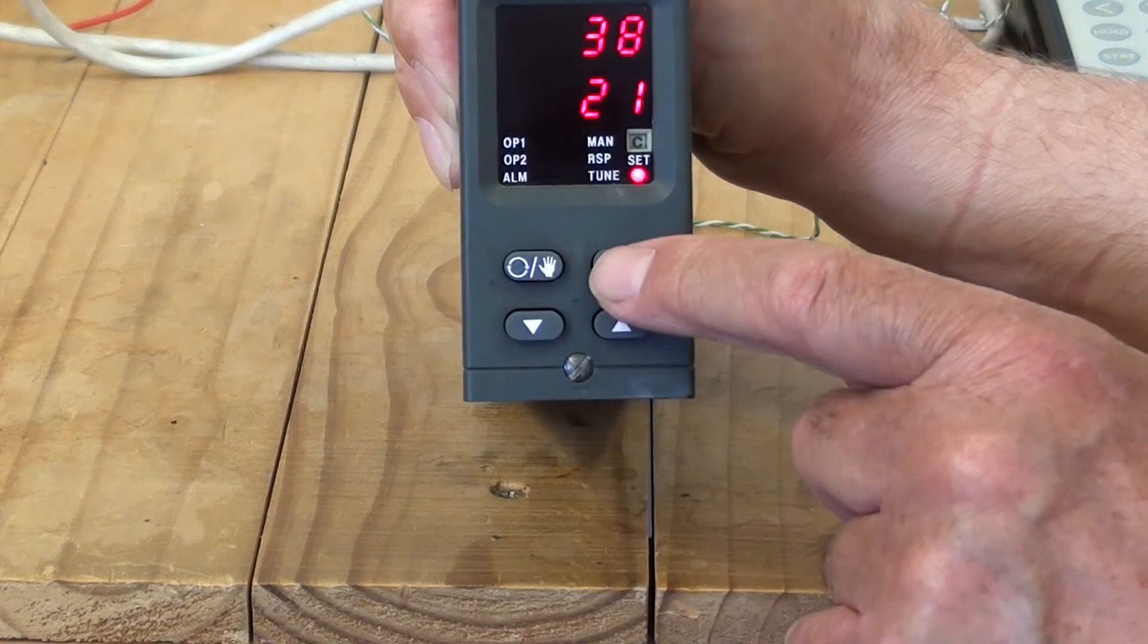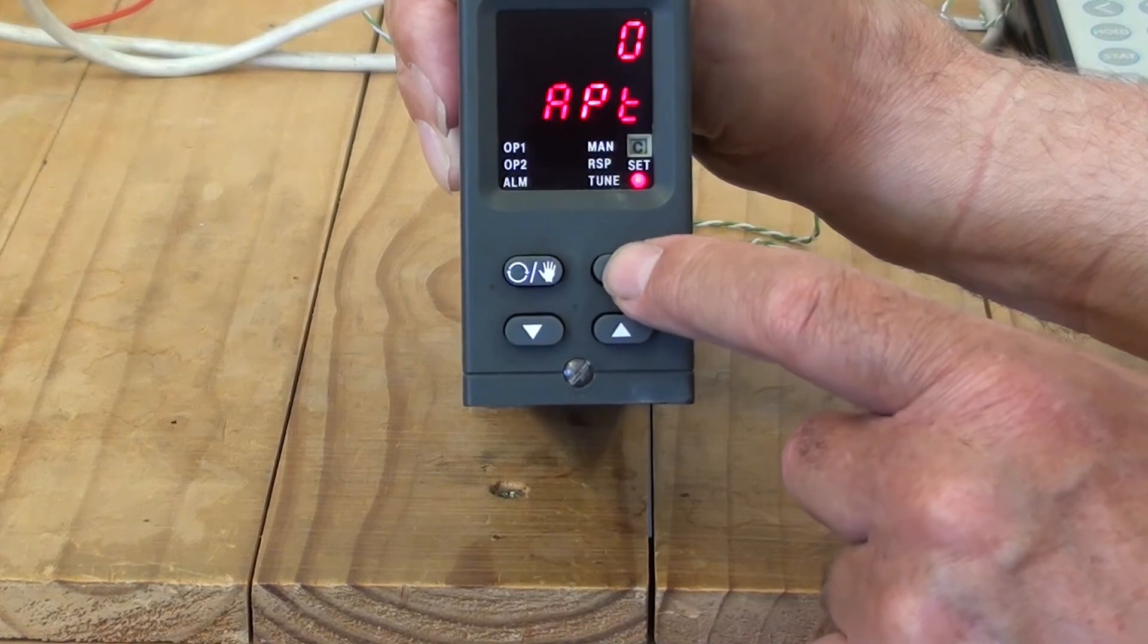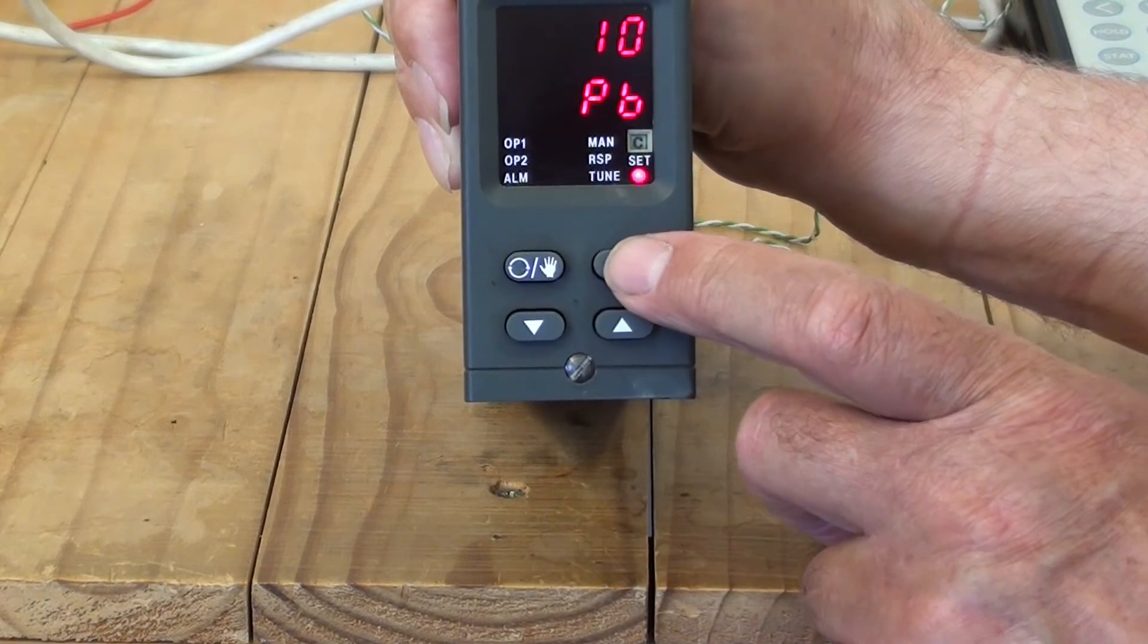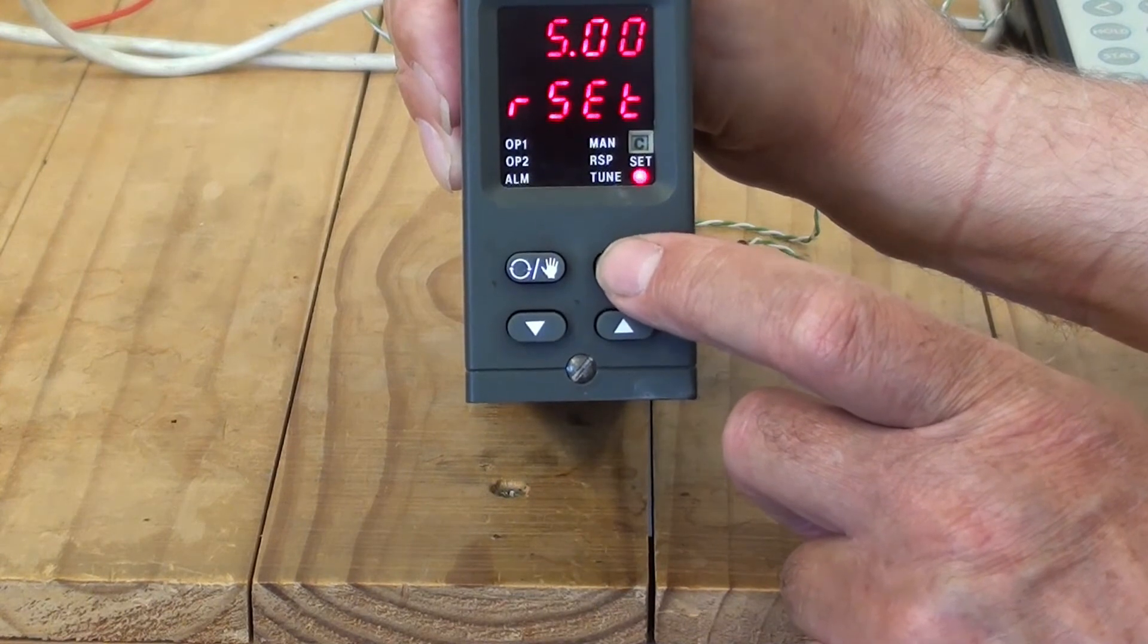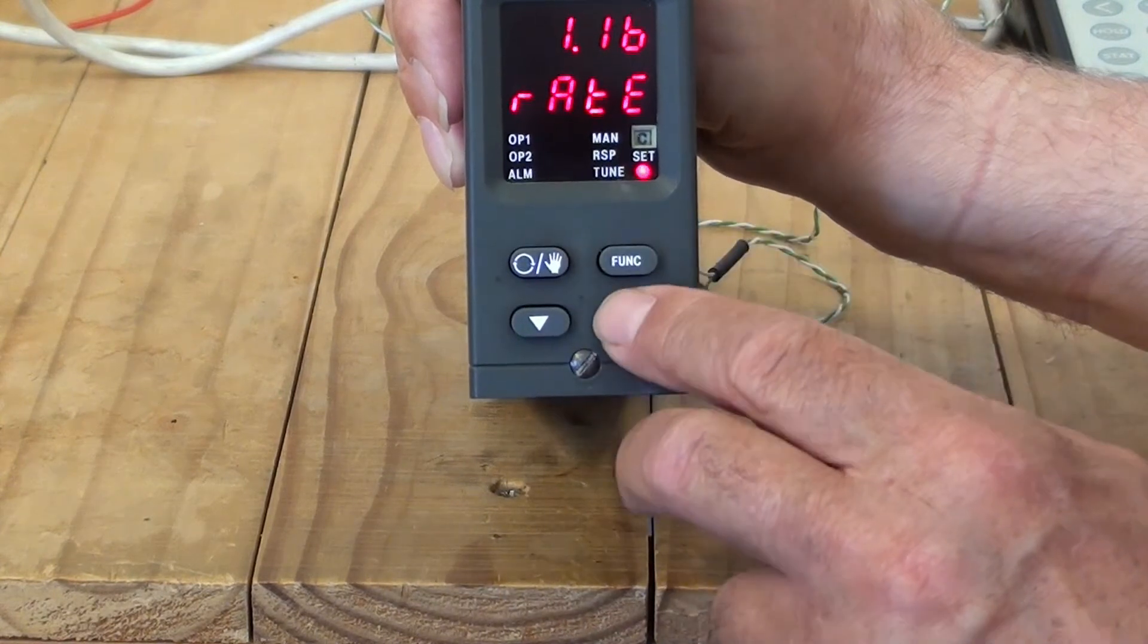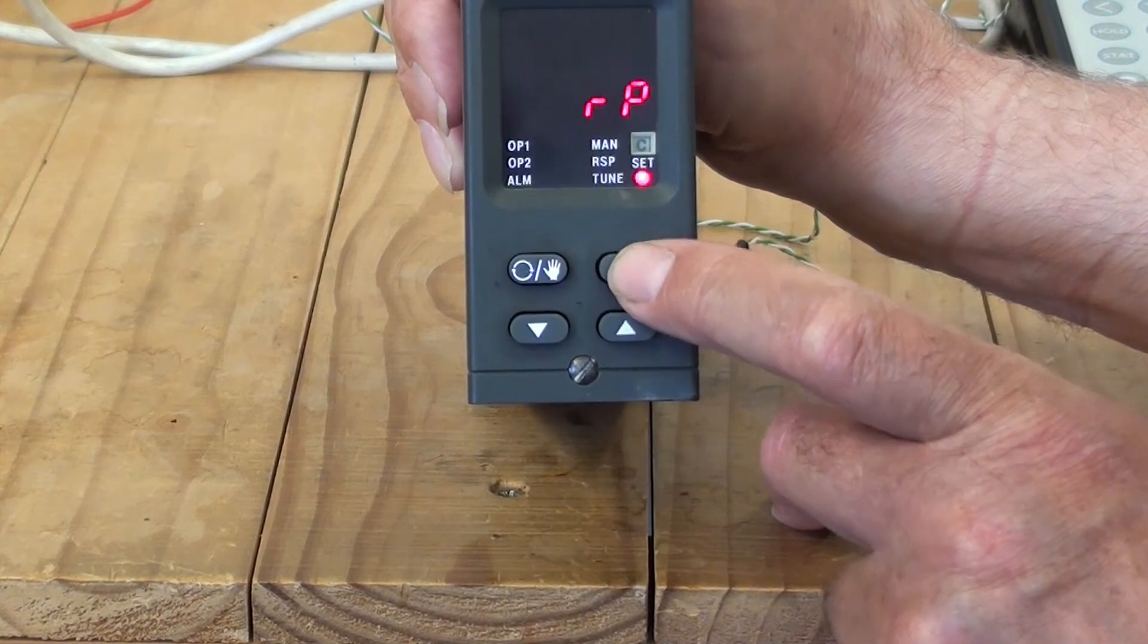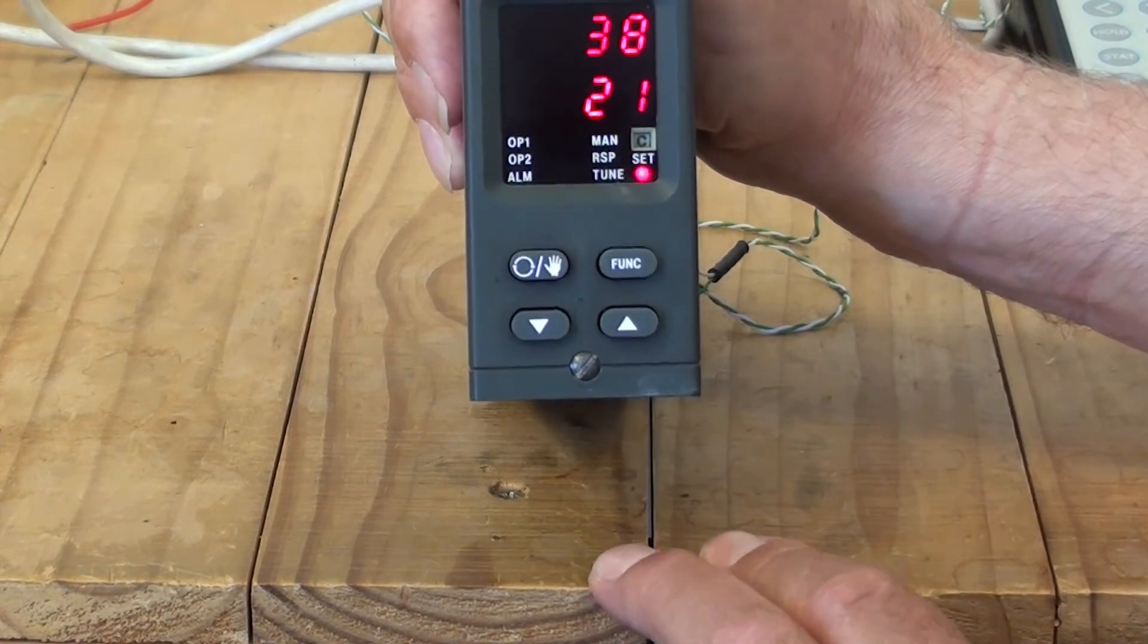If you press the function key you can then scroll through that menu. So here for example, now I'm in that menu. This shows me the output power. Here's the PID terms - proportional band, the reset (the integral time), the rate (the derivative time). You can adjust these of course by just using the up and down arrows. Setpoint limits, the high limit, the low limit, the outputs, cycle time, and exit.